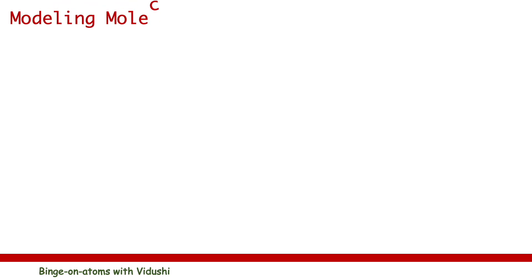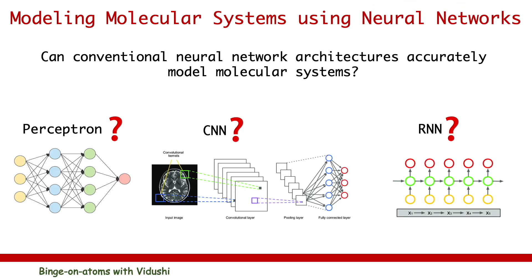Let's speak of challenges in modeling molecular systems using deep neural networks. Do you think conventional neural networks such as perceptron, convolutional neural networks, or recurrent neural networks will be suitable to accurately model molecular systems and predict useful information such as potential energy surface, charges, stresses, forces, and other physico-chemical properties?